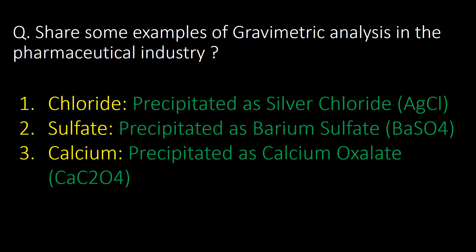Share some examples of gravimetric analysis in the pharmaceutical industry. First: chloride, precipitated as silver chloride. Second: sulphate, precipitated as barium sulphate. Third: calcium, precipitated as calcium oxalate.